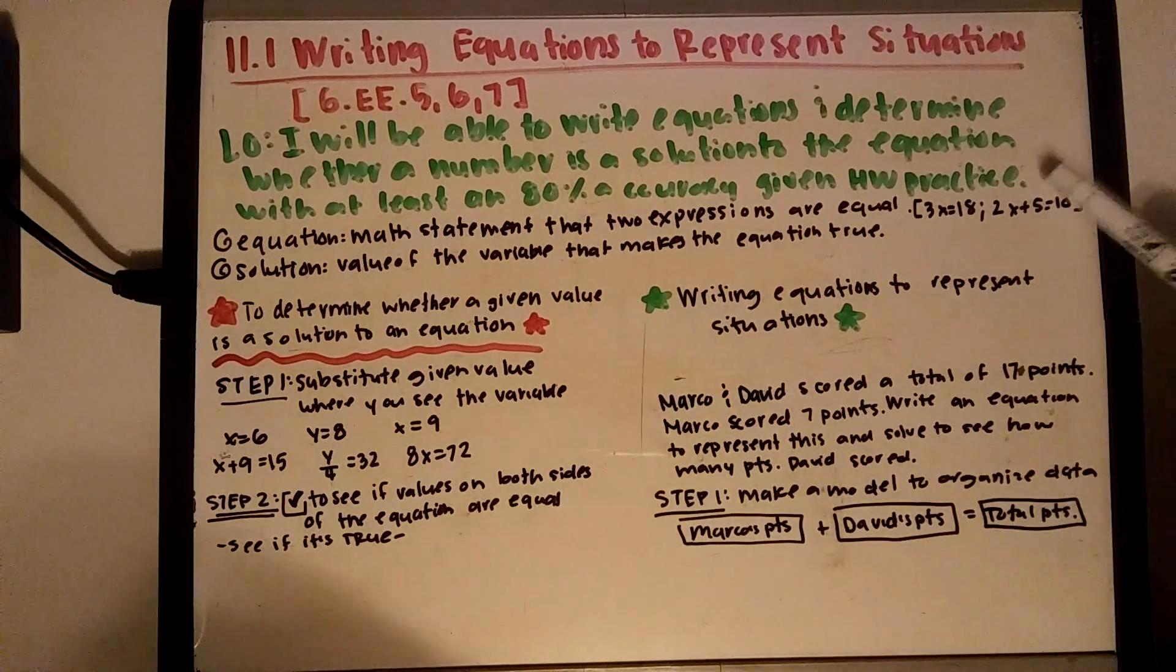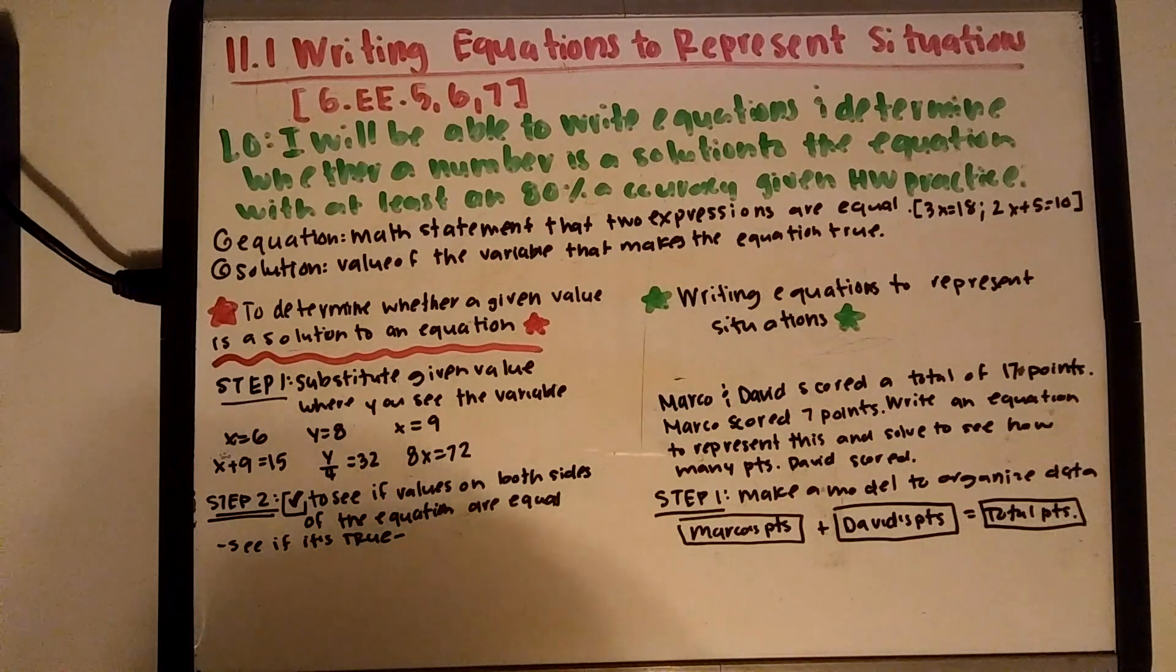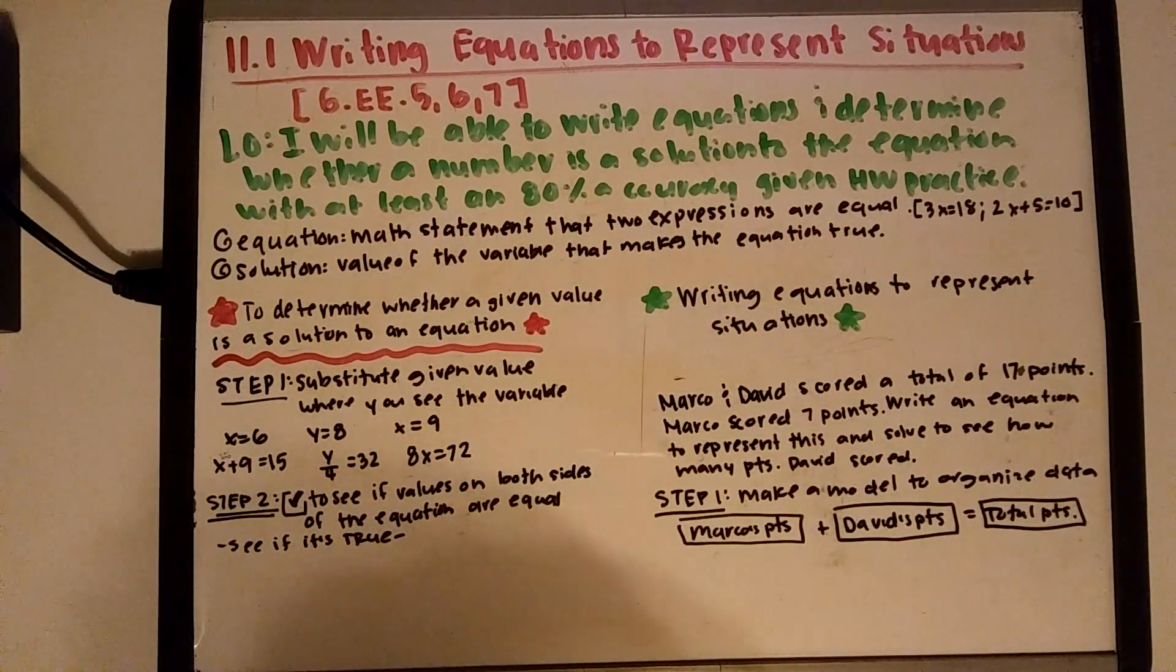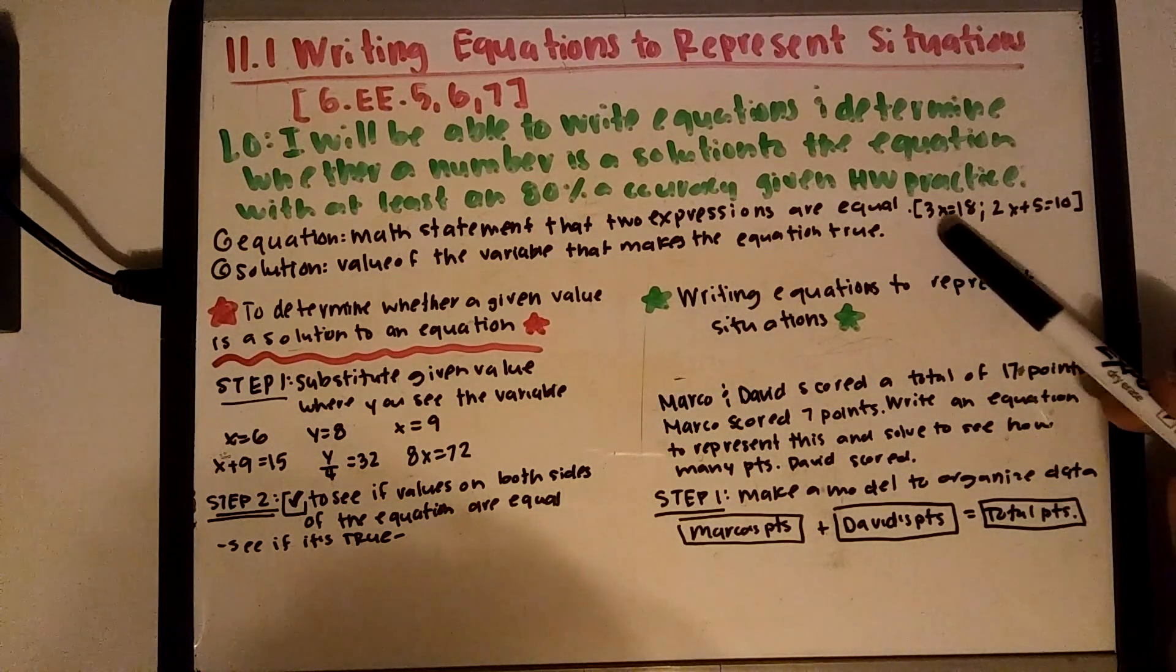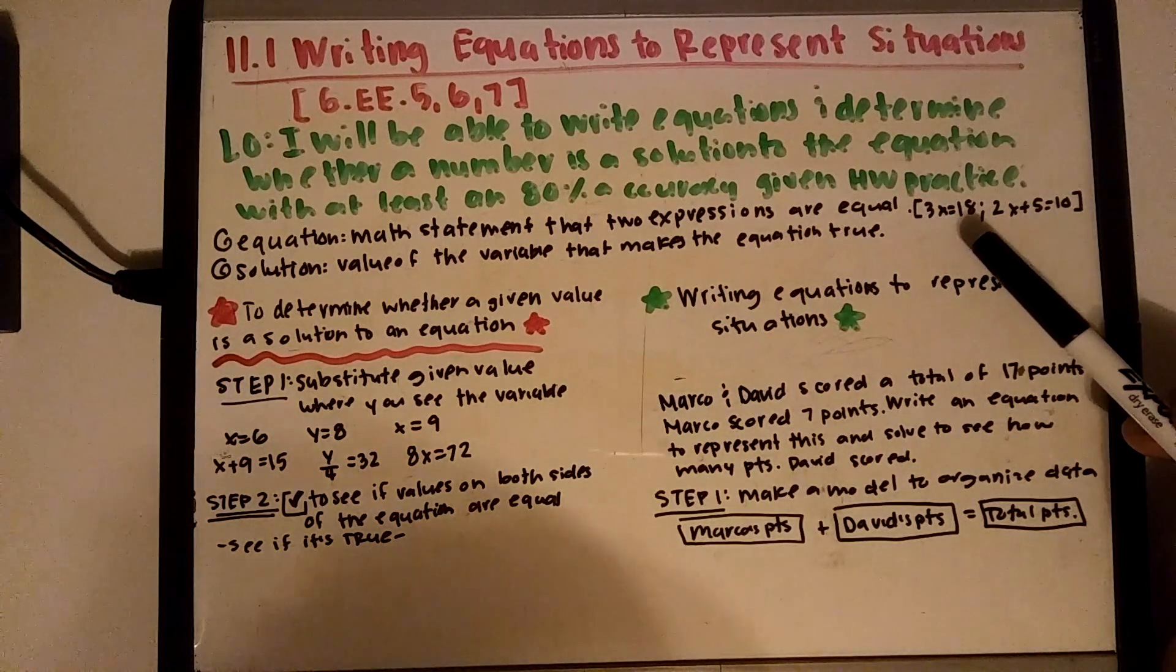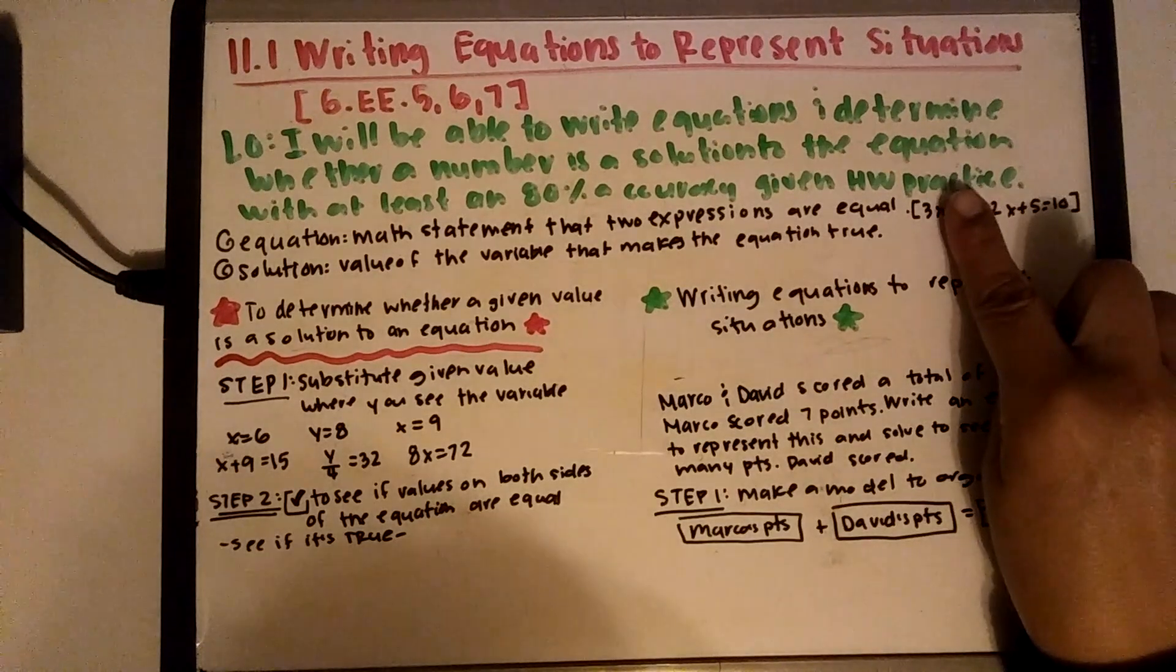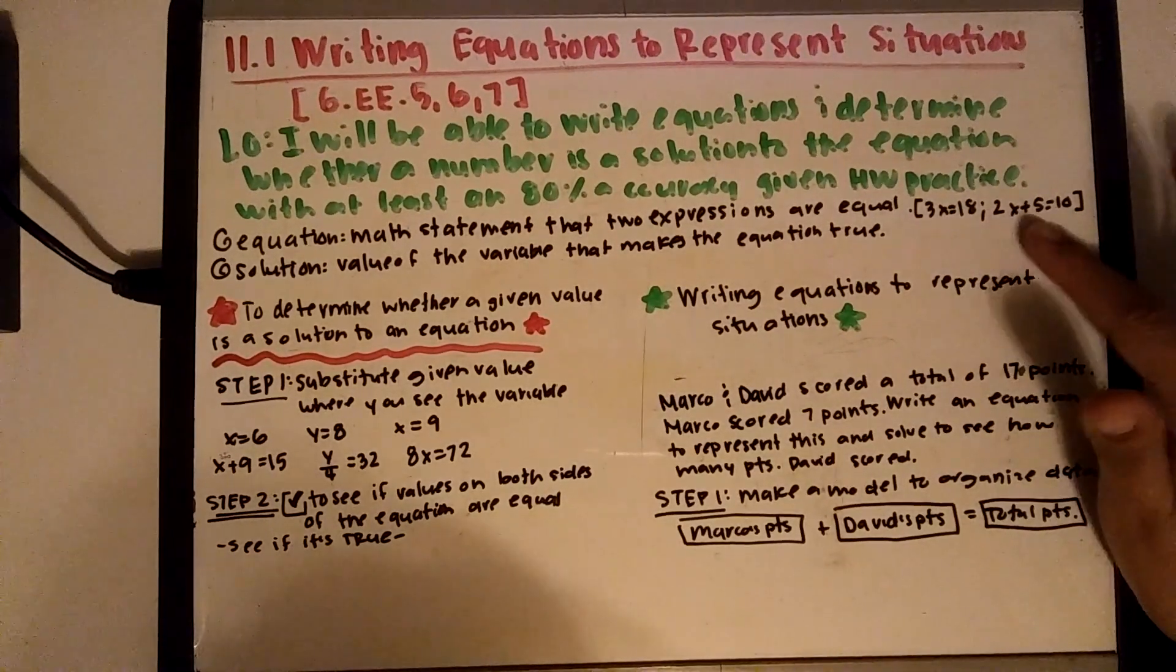We're shooting for 80% accuracy because that means you understand the material. Two new vocabulary words: an equation is basically a math statement where two expressions are equal to each other. For example, 3x equals 18. Remember, it has to have an equal sign. If it doesn't have an equal sign, it's just an expression, but if it has an equal sign, that's an equation.